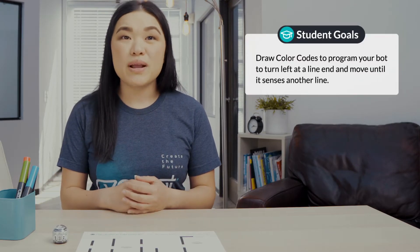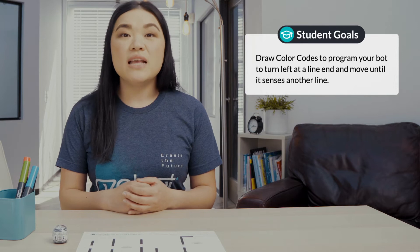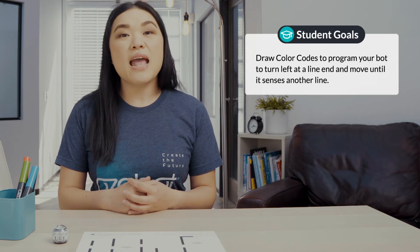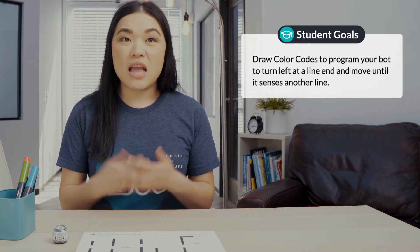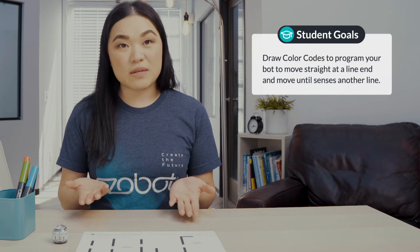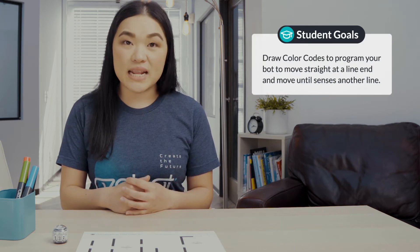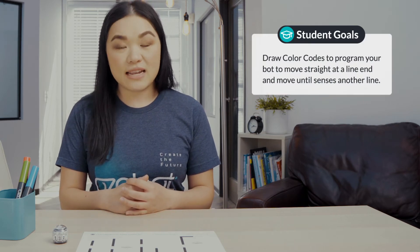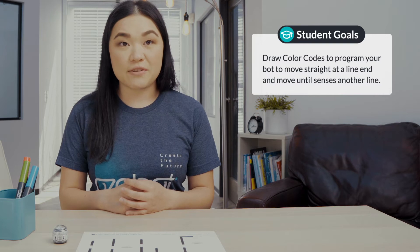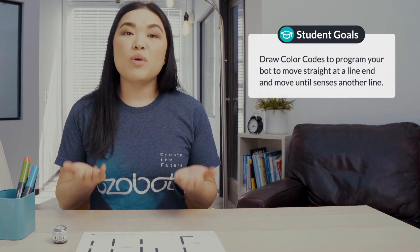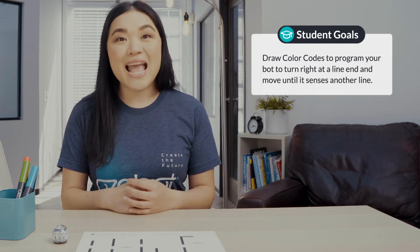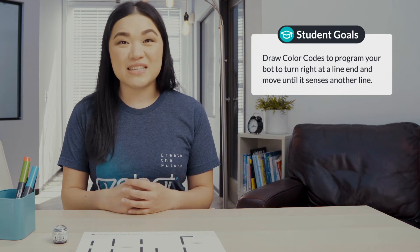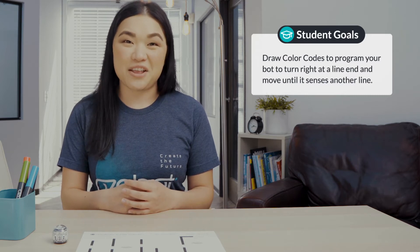In today's lesson you will draw color codes to program your bot to turn left at a line end and move until it senses another line; draw color codes to program your bot to move straight at a line end and move until it senses another line; and draw color codes to program your bot to turn right at a line end and move until it senses another line.